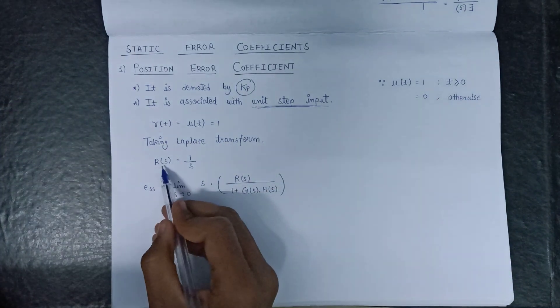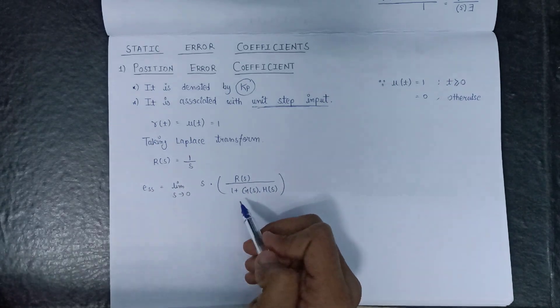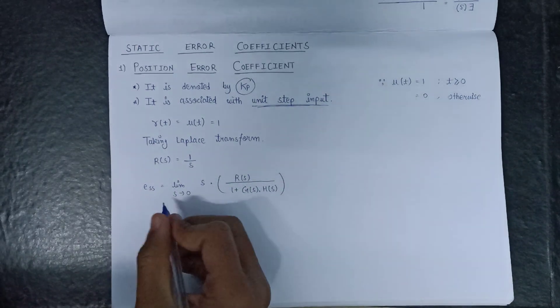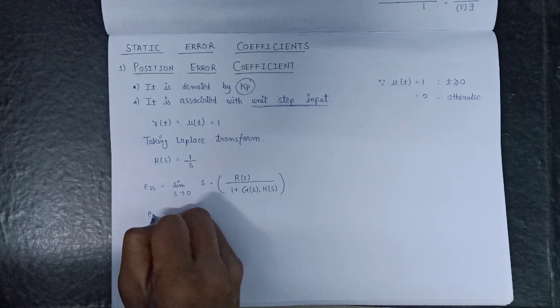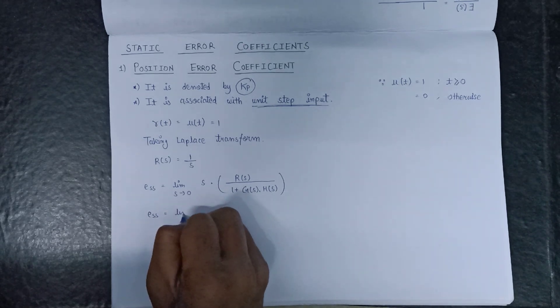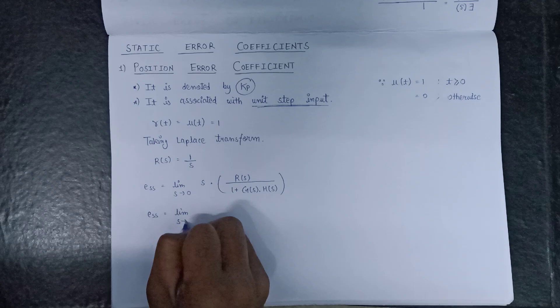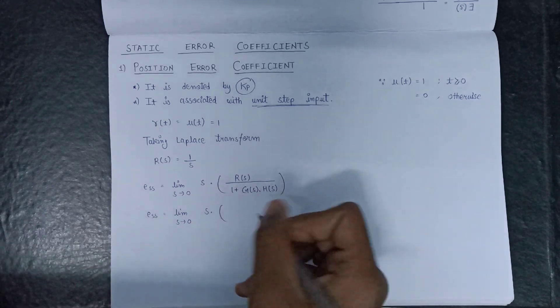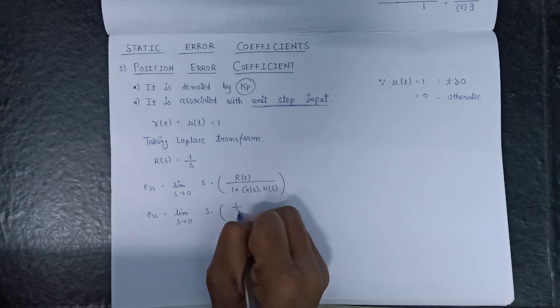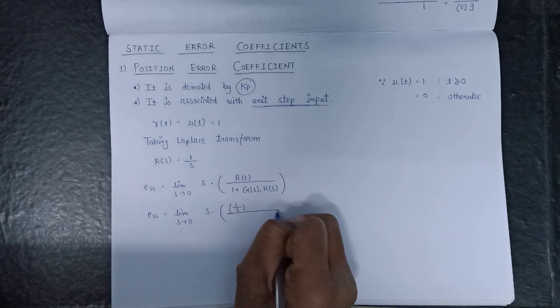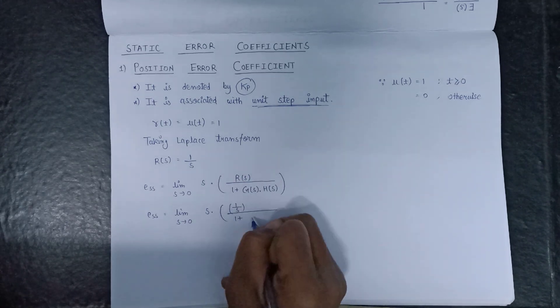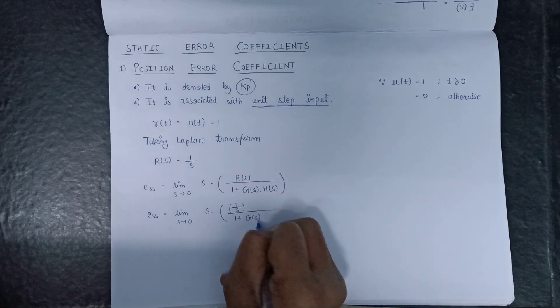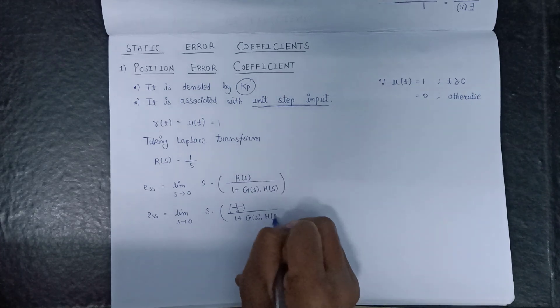Here we have the value of R(s). So on putting the value of R(s), E(s) will become limit s tends to 0, s into 1 over s in the numerator and 1 plus G(s) into H(s) in the denominator.